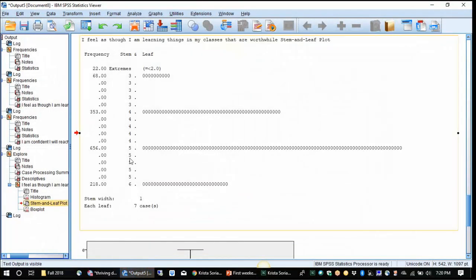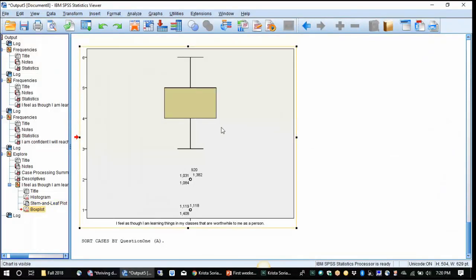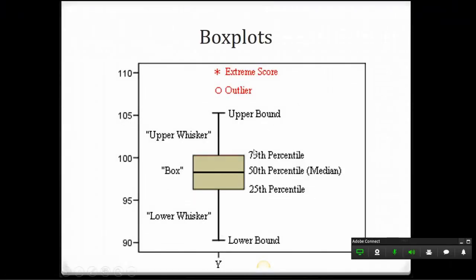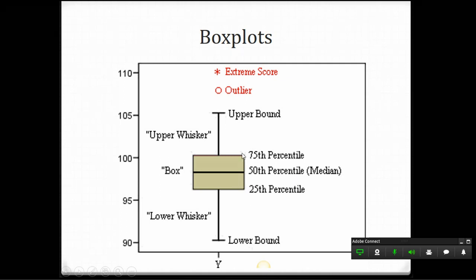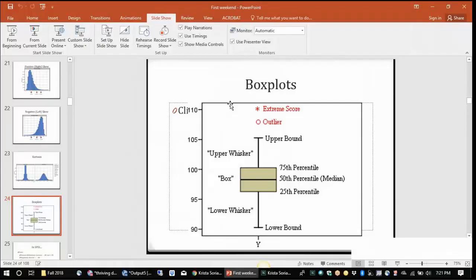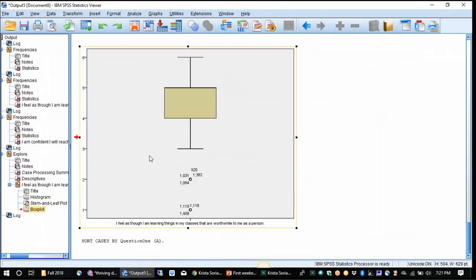We also get some additional information from our output. One is that we get a stem and leaf plot. And this is essentially a histogram tilted on its side. And then we also get a box plot. And the way that box plots work is they describe not the mean of the data, but instead the median of the data. So here we get a 50th percentile, which is essentially our median. And then we get the bounds of the 75th and the 25th percentile. So this is our interquartile range right here. And then we also have some indications of extreme scores or outliers. And I think that that's how box plots are the most useful to us. So if we look at our box plot, we do see some of those outliers. They're showing up for us.